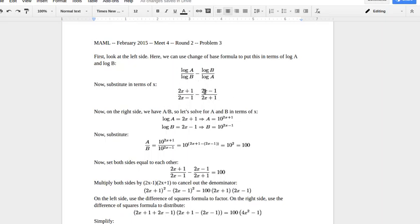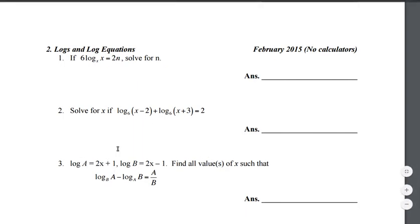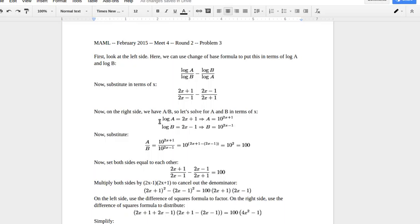Now on the right side, we have a over b, so we need to know what a and b are. If log of a equals 2x plus 1, we take 10 to the power of both sides to get a equals 10 to the 2x plus 1. Similarly, b equals 10 to the 2x minus 1. Whenever you see log of something and they don't specify a base, you should assume it's base 10 — that's required to solve this problem correctly.